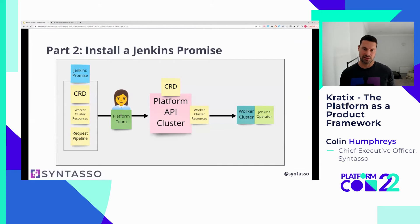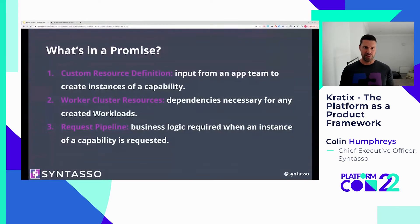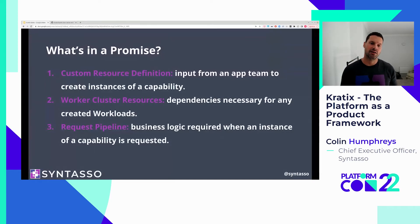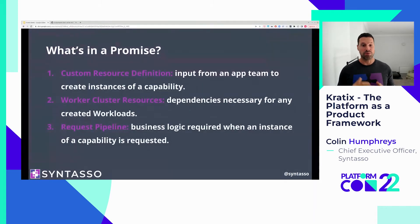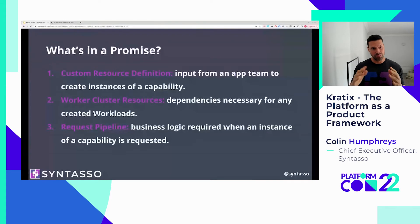A promise has three things within it. First, a custom resource definition — think of it as a form the application team fills in to tell the platform team what they need. For Jenkins, we make that super simple: the application team just specifies the name of the Jenkins instance. The platform team is left to specify the JVM size, plugins, RAM, storage — all of those platform team concerns. The application team just gives a name.